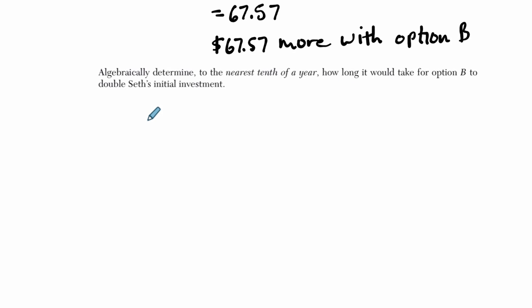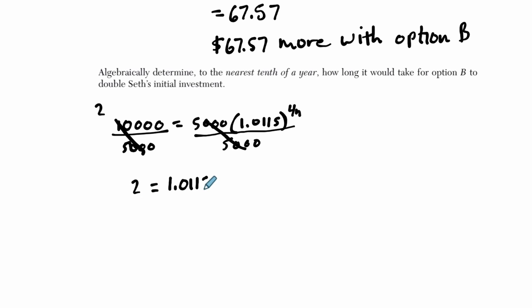Then we say, algebraically determine to the nearest tenth of a year, how long it would take for option B to double Seth's initial investment. Option B to double the investment. The initial investment was 5,000, so the doubling would be 10,000. If we're using option B, we want to know when does 5,000 times 1.0115 to the 4N equal 10,000. So the first move to solve is I divide both sides by 5,000. These cancel. 10,000 divided by 5,000 is just 2. So I get 2 equals 1.0115 to the 4N.